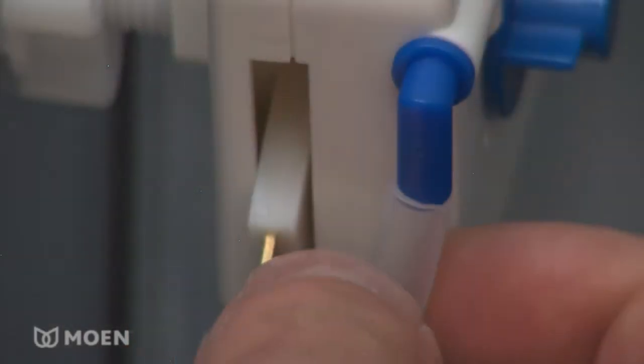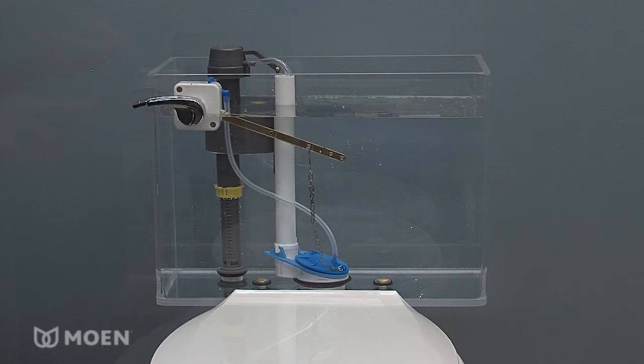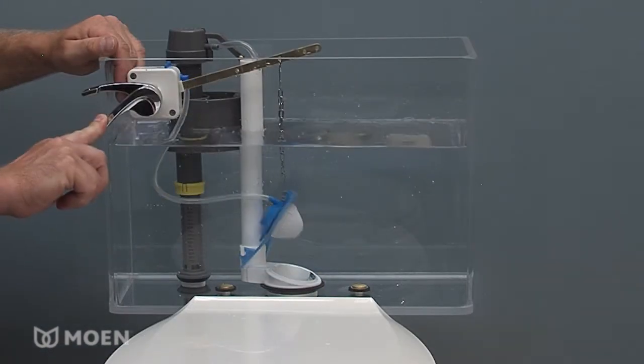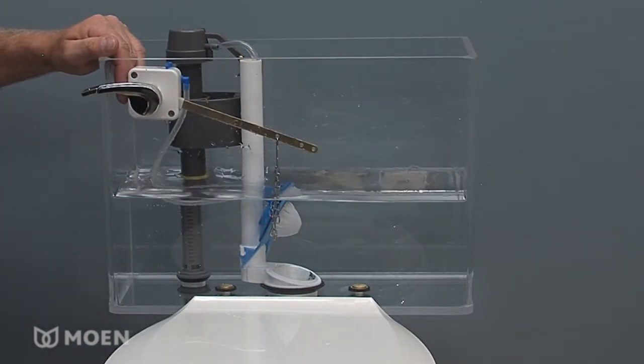Install the new Dual Flush Water Saving Toilet Conversion Kit in 3 easy steps. That's all there is to it! Choose your flush and start saving water and money.